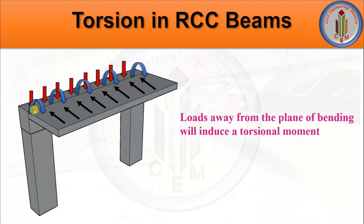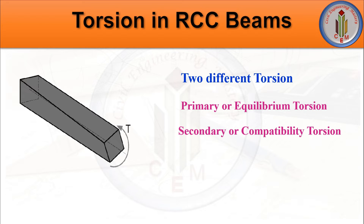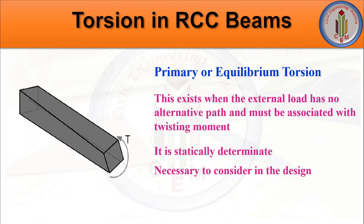In reinforced concrete design, the terms primary torsion and secondary torsion refer to different torsion-inducing situations. Primary torsion, also called equilibrium torsion, is statically determinate. Secondary torsion is called compatibility torsion, which is statically indeterminate. Primary or equilibrium torsion is induced by an eccentric load where the external load has no alternate load path and must be associated with a twisting moment. This primary torsion we cannot ignore - it is very important and must be considered in design.